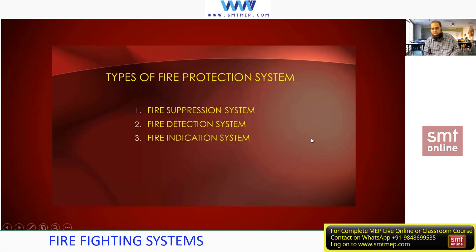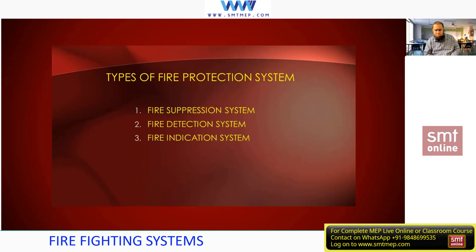We're talking about the firefighting system — as a beginner, we are dealing with firefighting system design, not fire and safety. Firefighting systems used for building protection are classified into three categories. The first is the fire separation system: the system used to control the fire, for example the sprinkler system, standpipe system, or CO2 system. The system used to control the fire comes under fire separation.